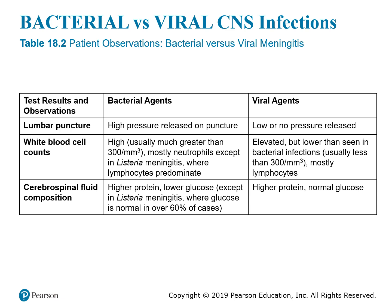Additional testing includes chemistry testing looking at protein and glucose levels in the spinal fluid, compared against the patient's blood protein and glucose levels. With viral meningitis, glucose is normal but protein is higher. With bacterial meningitis, glucose is lower because those organisms use the glucose to thrive within the spinal fluid.